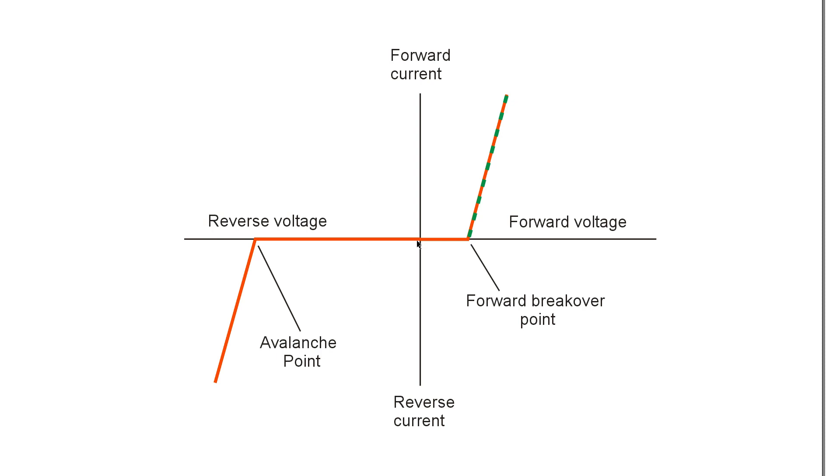With respect to reverse bias, a diode normally will not conduct until it reaches a certain point called the avalanche point, which I explain in another video.